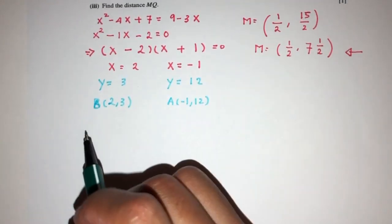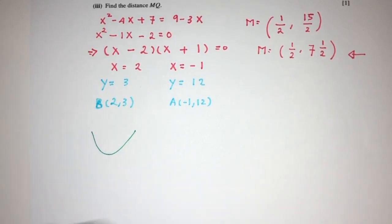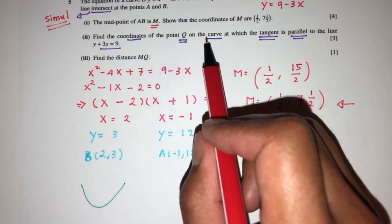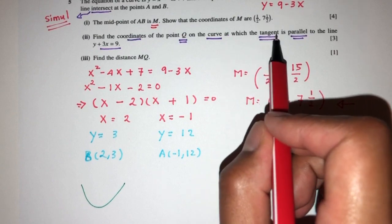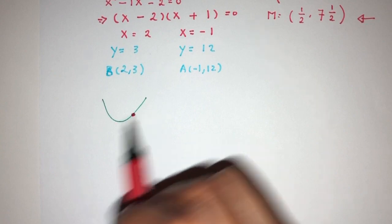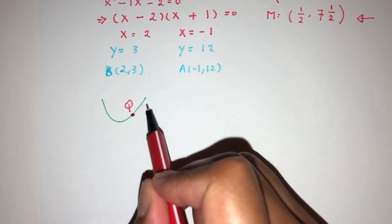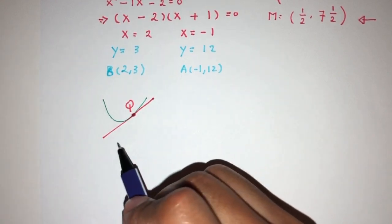For example, I have a curve here, something like this. I have to find the point Q on the curve at which the tangent is in the same direction to this line. Let's say my point is here, this is called Q. I have to find this point where my tangent is in the same direction as this line.